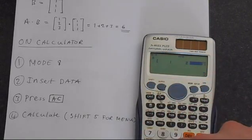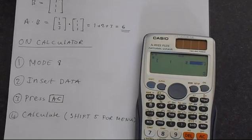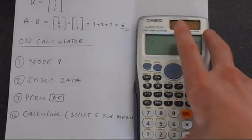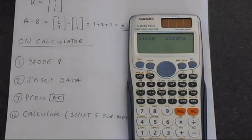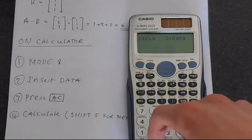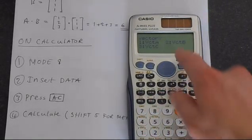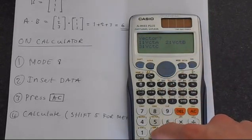So press shift, and then 5 for the vector menu. Move the calculator up a bit. So 5 puts us in the vector menu. We want to access the data. So press 2, and then press 2 again to get into vector B.